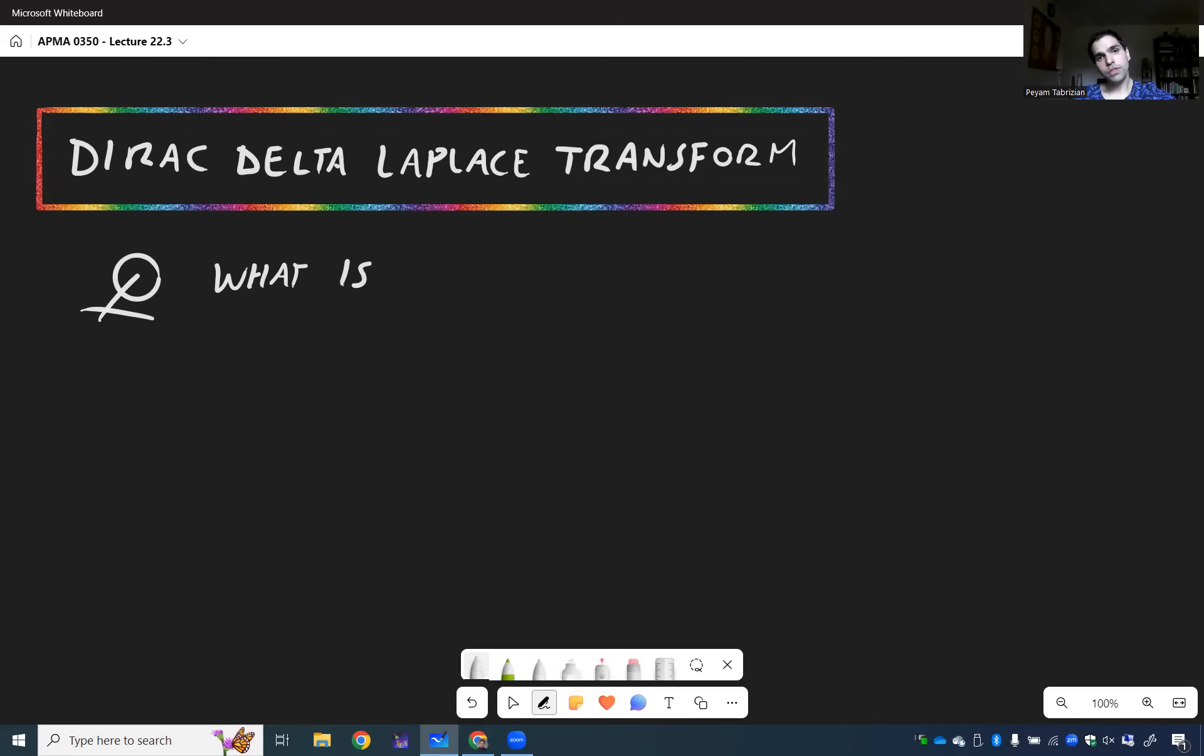So what is L of this infinite spike at zero? Remember, Dirac delta just looks like this: very thin, and then jumps up to infinity and back down to zero.